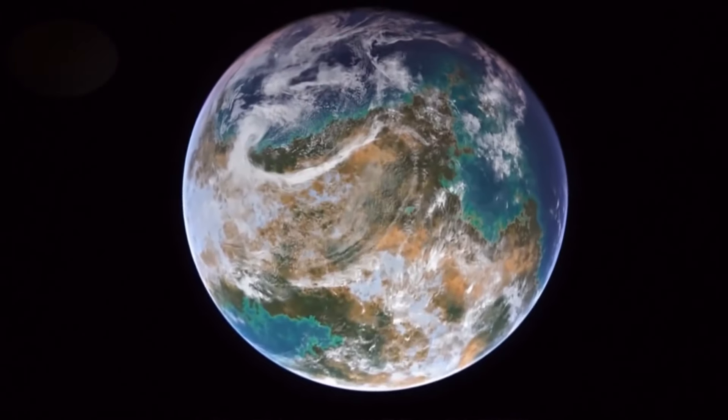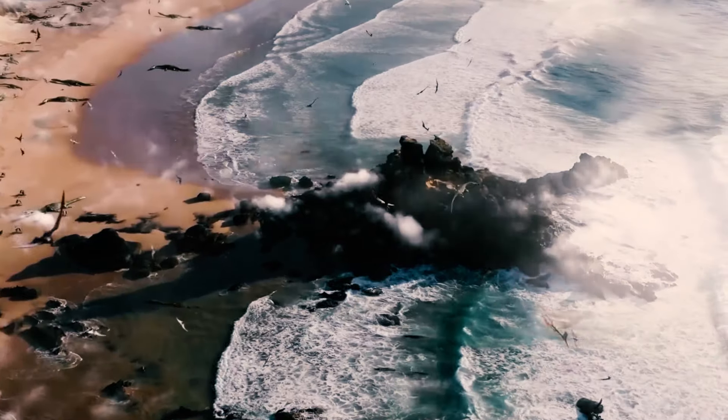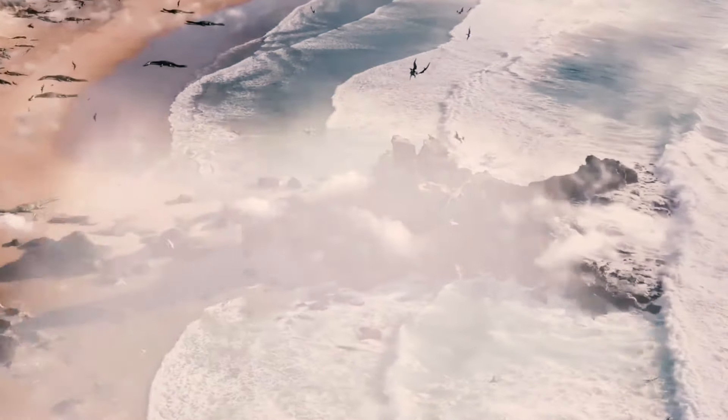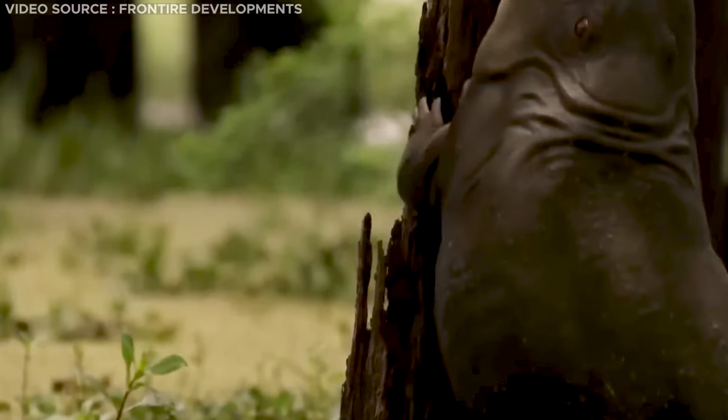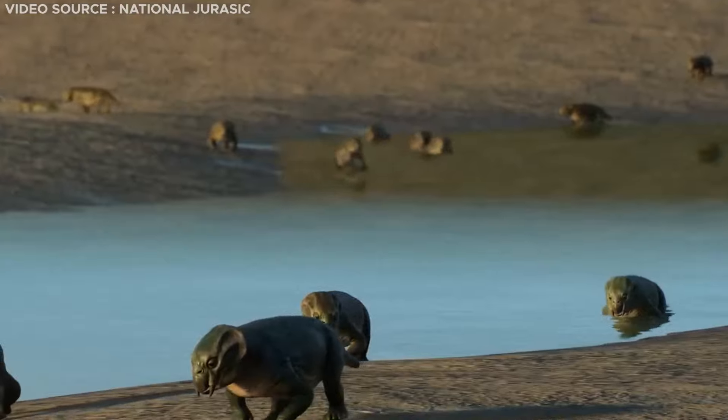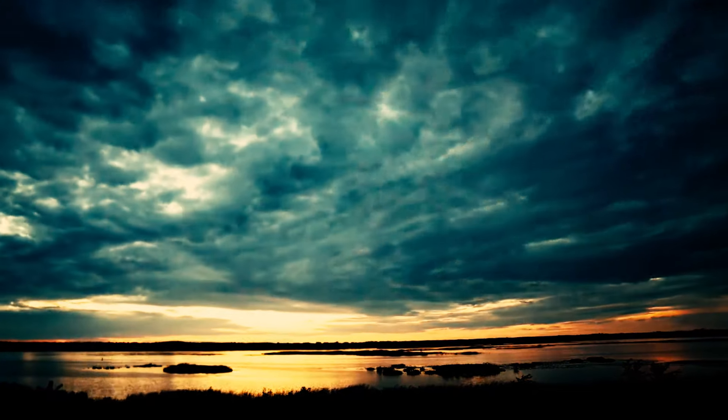Earth would have been very different approximately 620 million years ago. Aside from encountering peculiar fronds and worms reminiscent of extraterrestrial beings, one would have observed a variance in the duration of days.